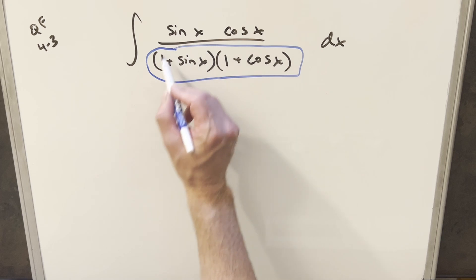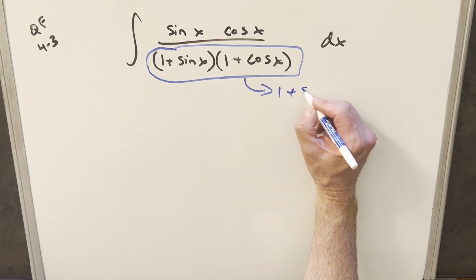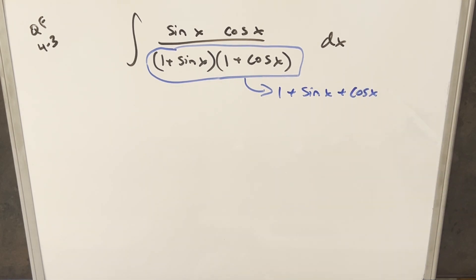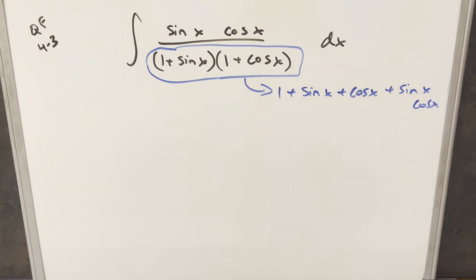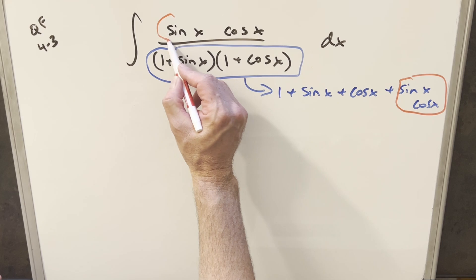what's it going to look like if I just multiply out this denominator here. If we do that, just distribute everything out, you're going to have 1 plus sine x plus cos x plus sine x cos x. But then the thing I notice here is that this piece, just this last thing, this is the same thing we have in the numerator.